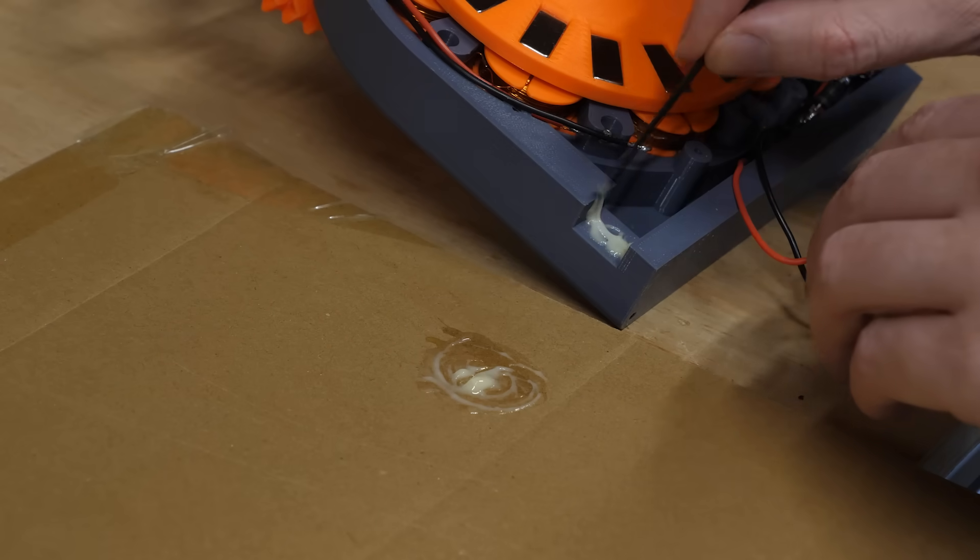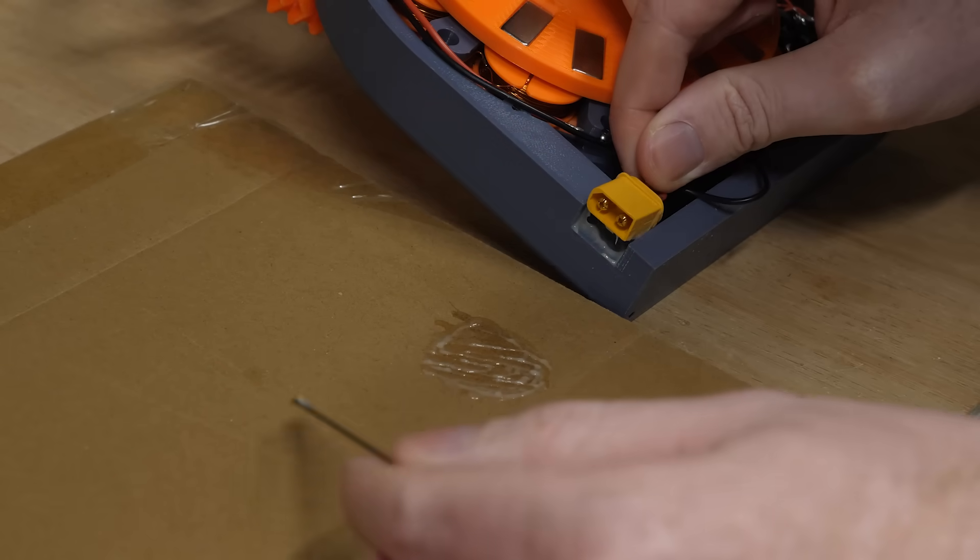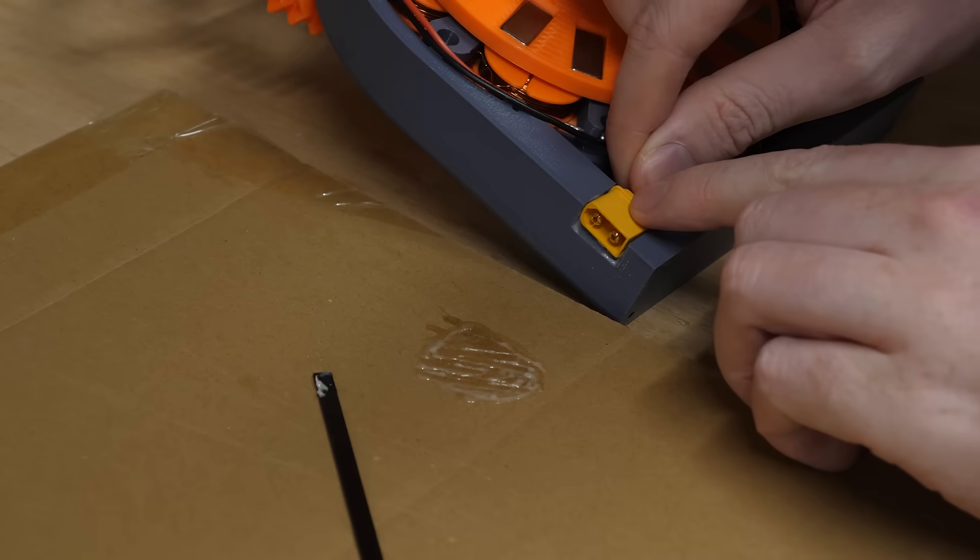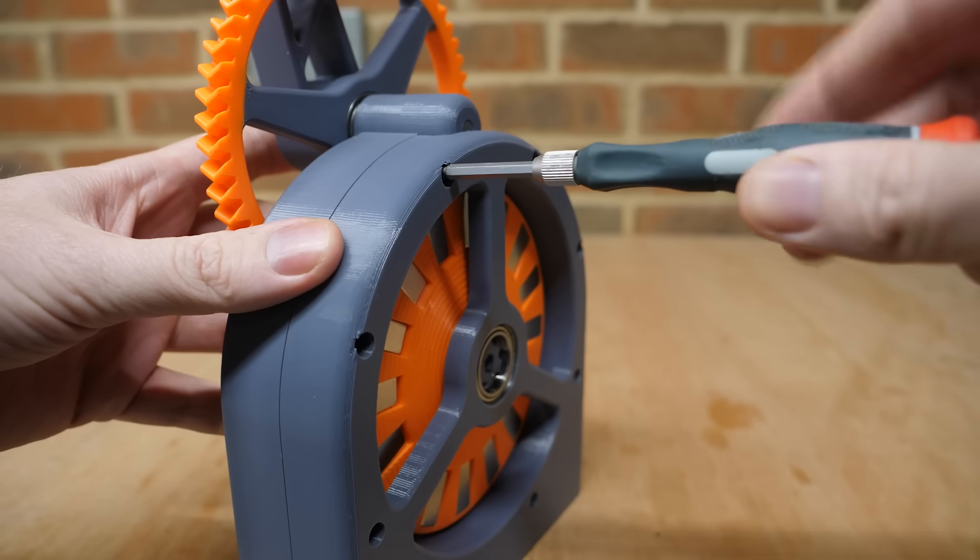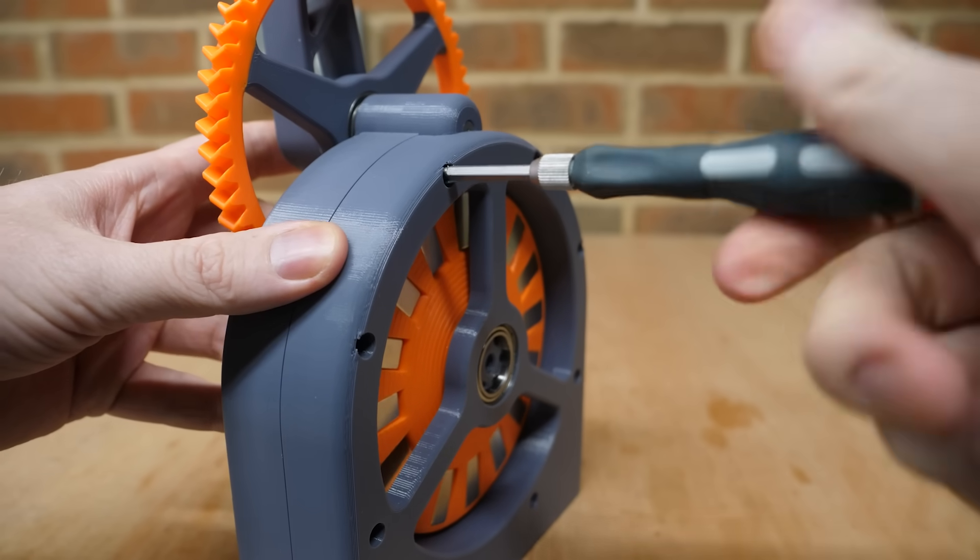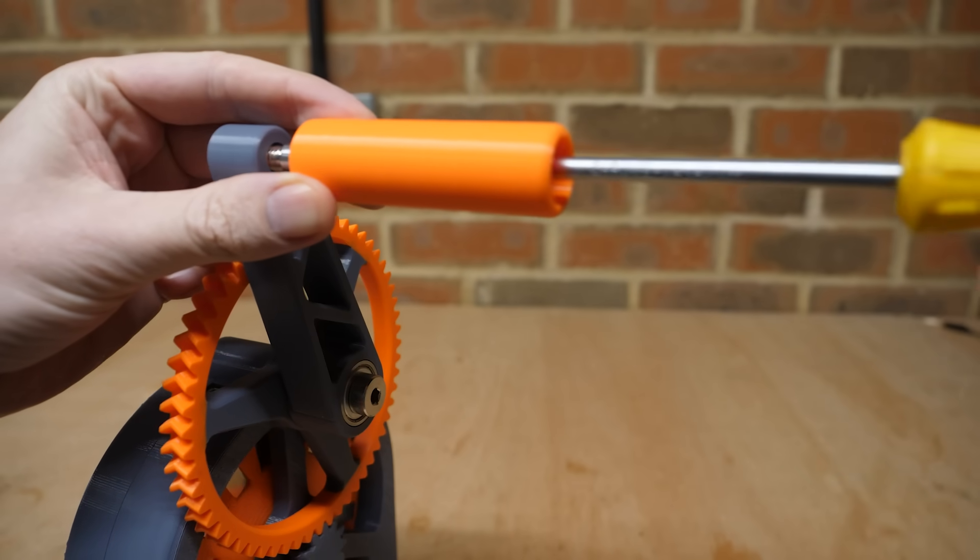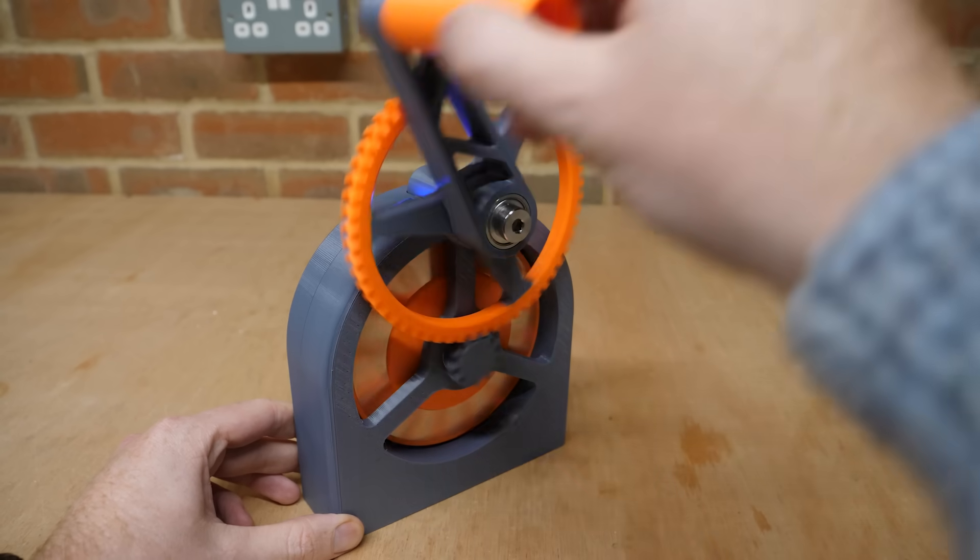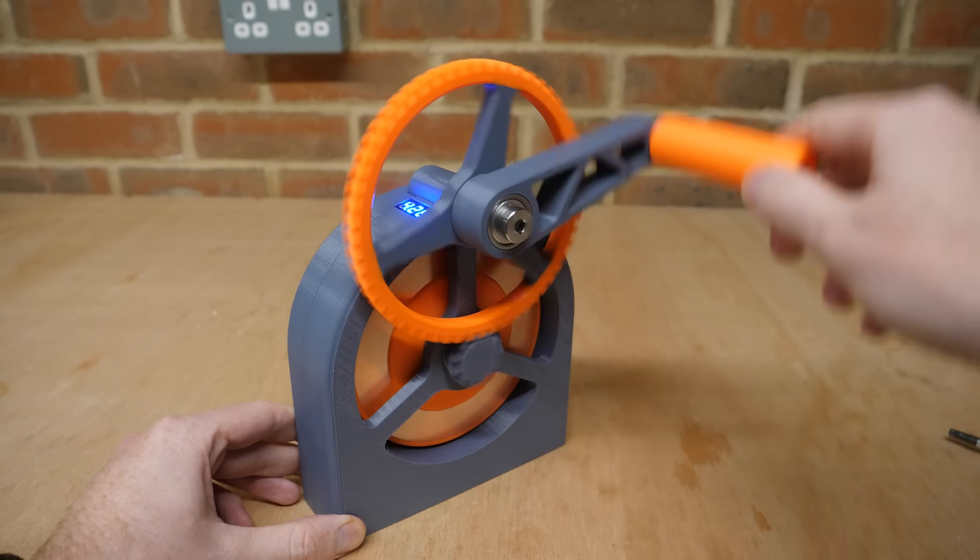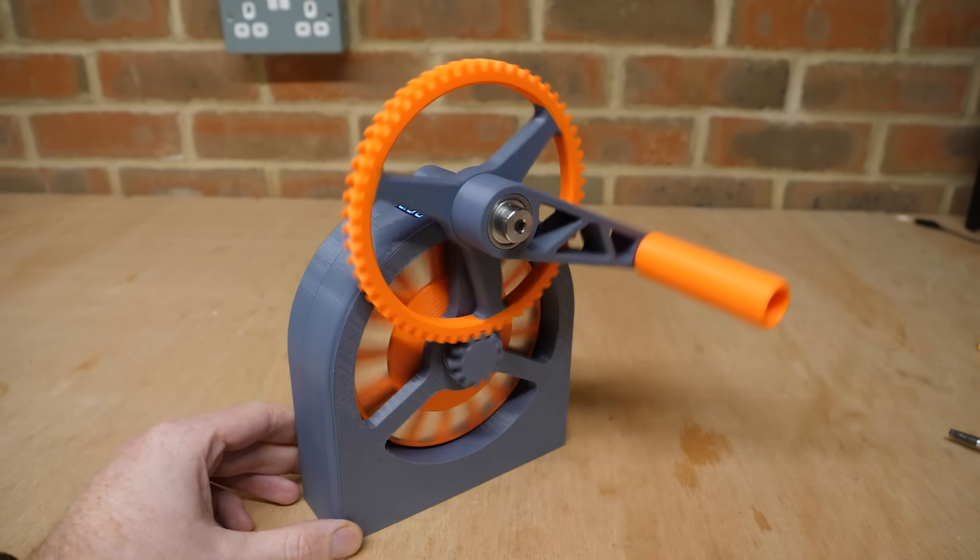I then glued an XT60 connector to the frame of the generator which will be used to output the generated power and attached the other half of the frame to cover up the electronics. And finally I added a handle to the crank and there we have it, a 3D printed hand crank generator. So how well does it work?